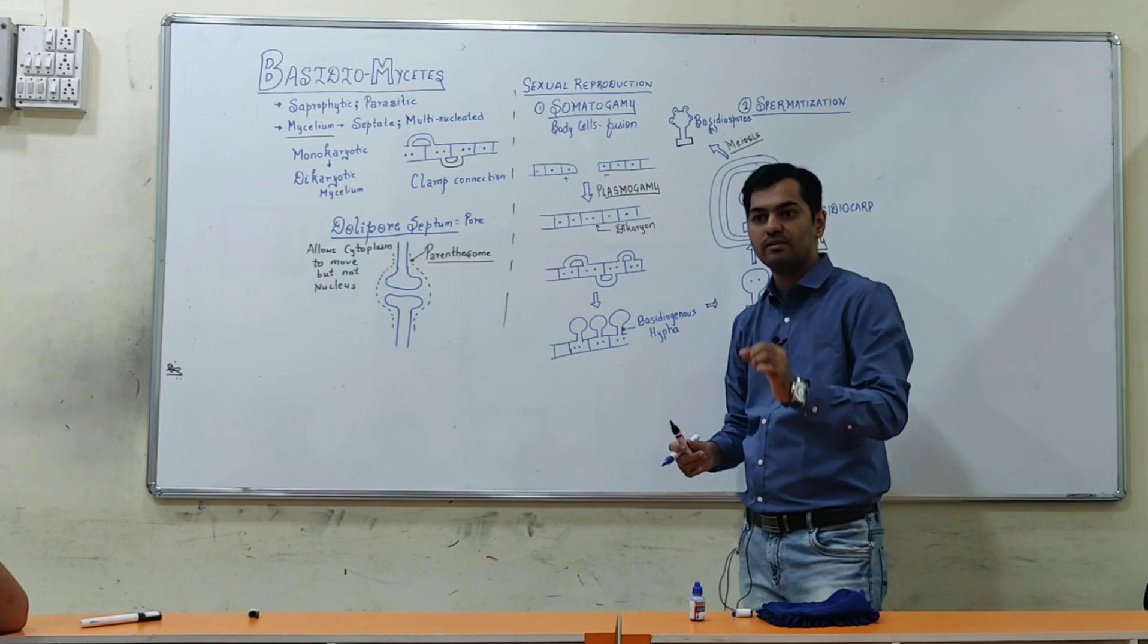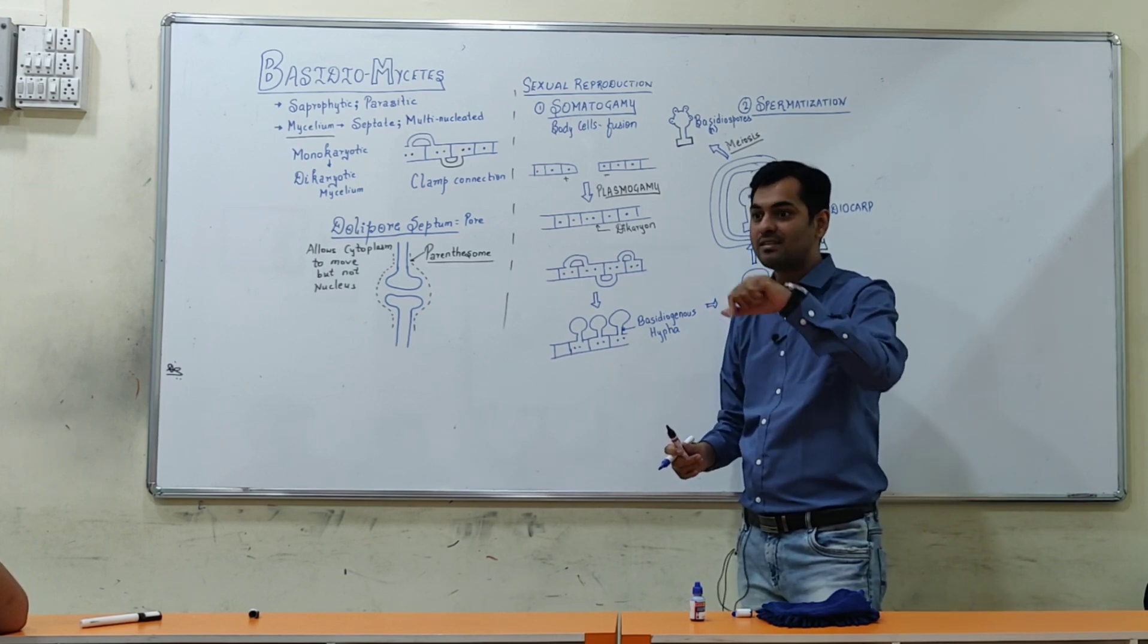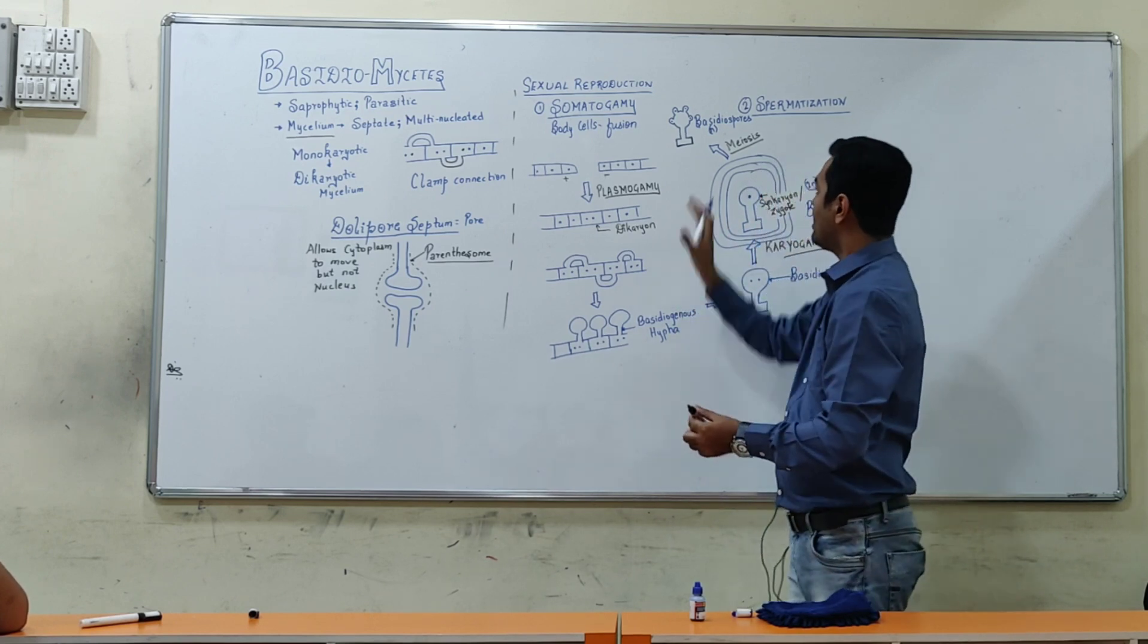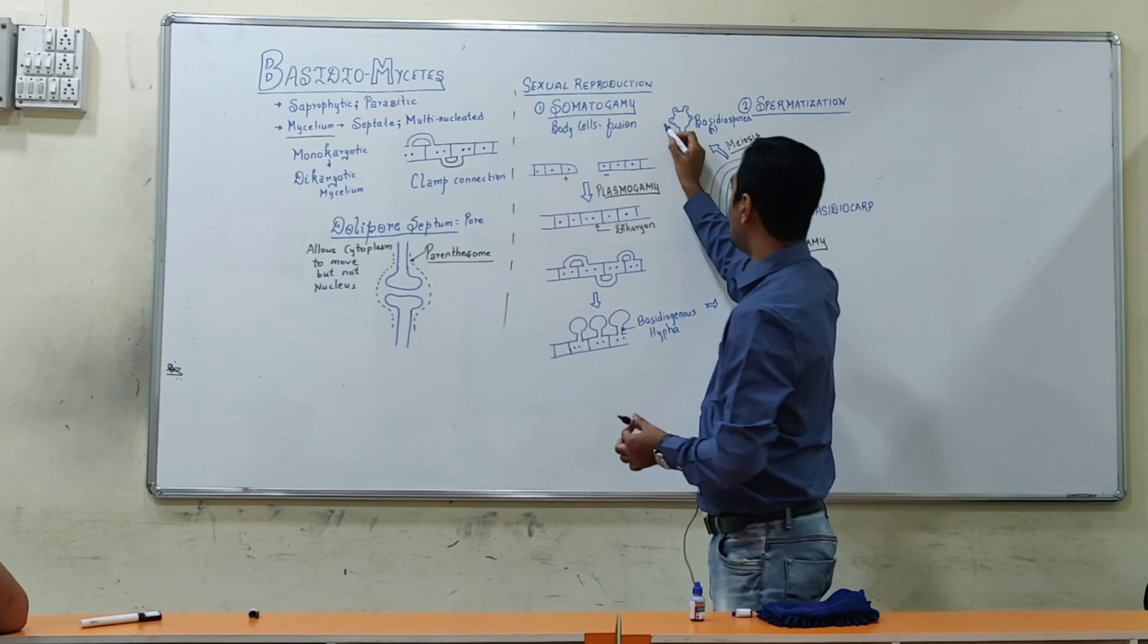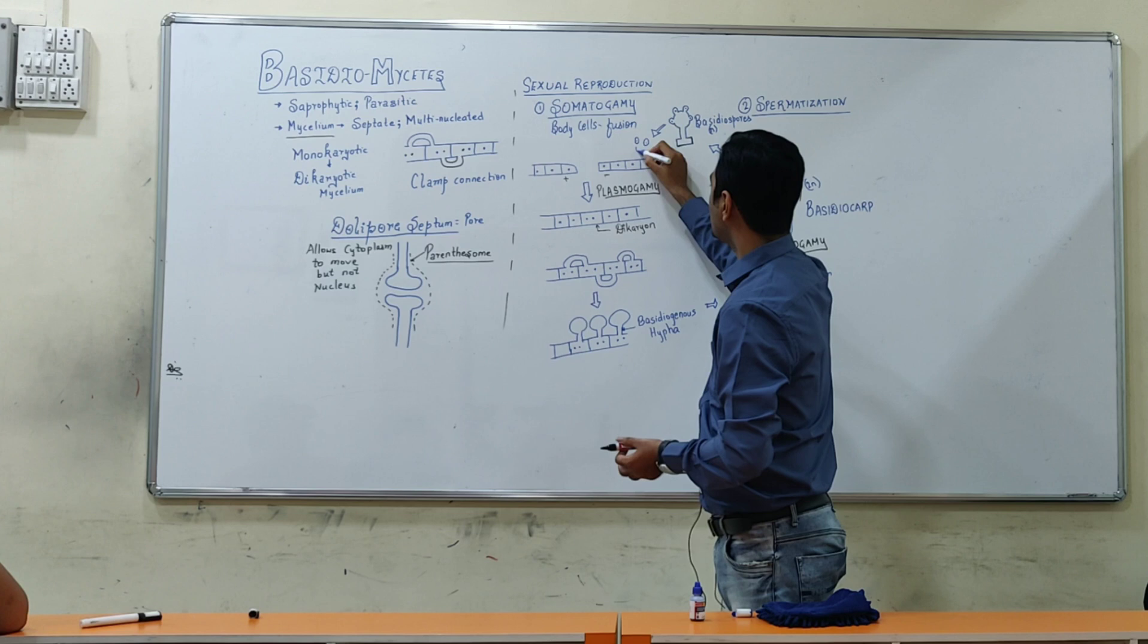Ascospores, this is an important point. I have described ascospores usually when we release, then there are four, no, eight cells stage, then it will be released. Then it will be released. This is the formation of basidiospores.